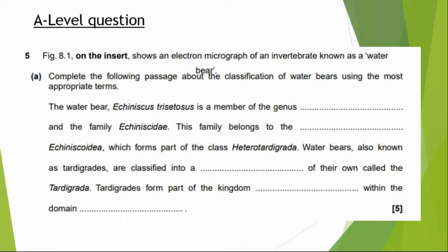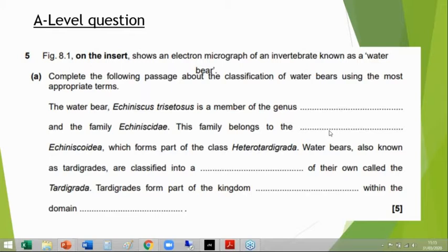The water bear's binomial name — if you know what a binomial name is, you'll know whether the first part is the genus or the species. You'll know whether the second part is the genus or species. I'm going to give you the poll and then go through it all with an explanation.